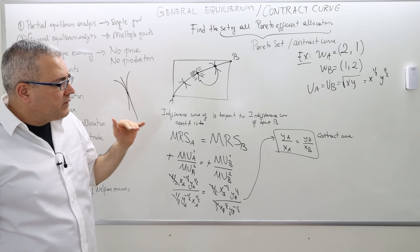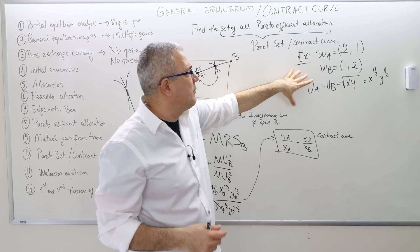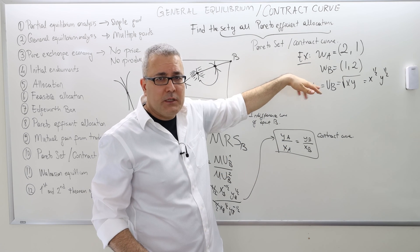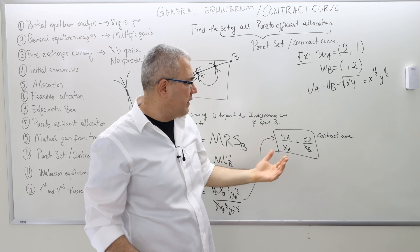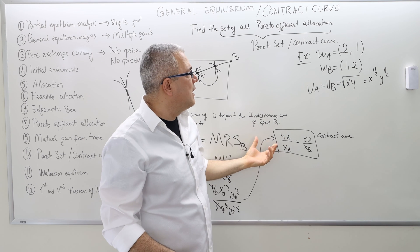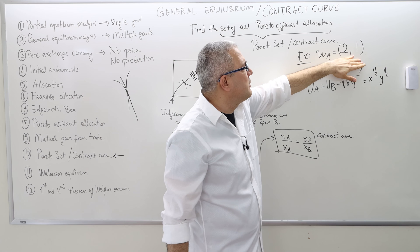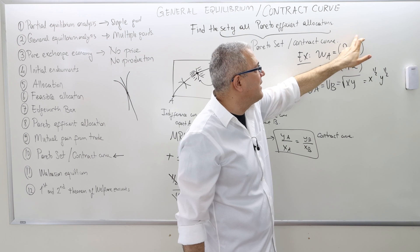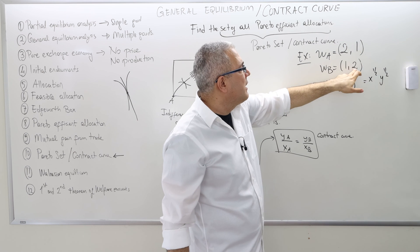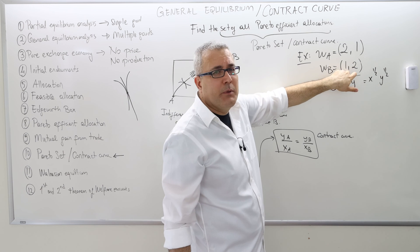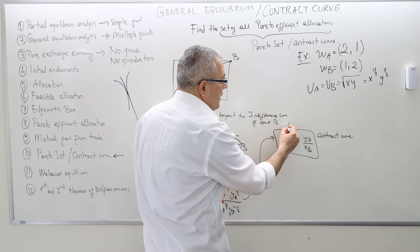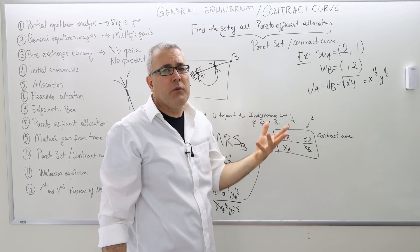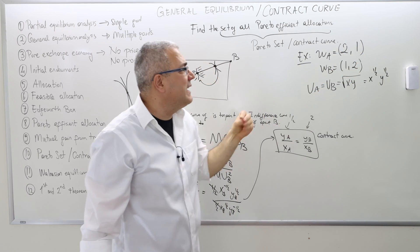We can check whether the initial endowment is Pareto optimal. If it lies on the contract curve, it is Pareto efficient; if not, it isn't. At the initial endowment W, MRS of agent A is YA/XA = 1/2, and MRS of agent B is YB/XB = 2/1 = 2. Since 1/2 ≠ 2, the initial endowment is not Pareto efficient. The Edgeworth box is 3 by 3, so the initial endowment is somewhere interior, not on the contract curve.